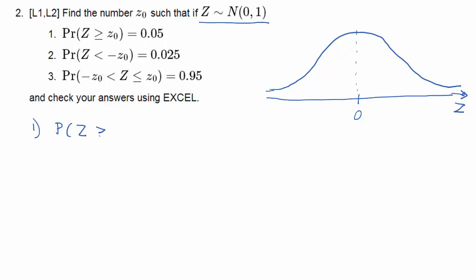So now the first question is, if you have that probability Z larger or equal to z0 is 0.05, what is the value for z0?